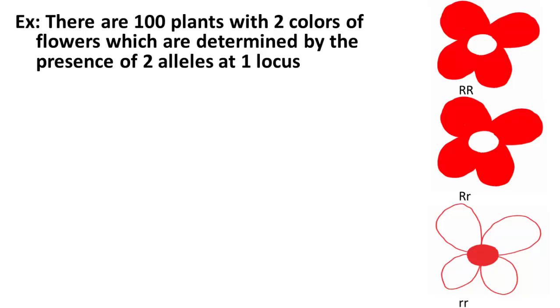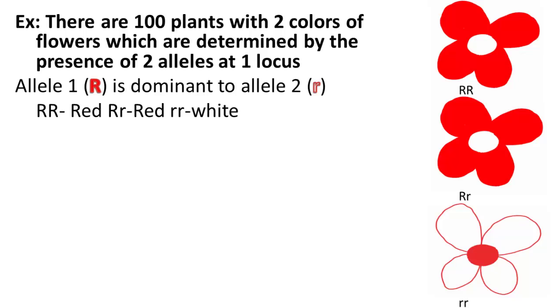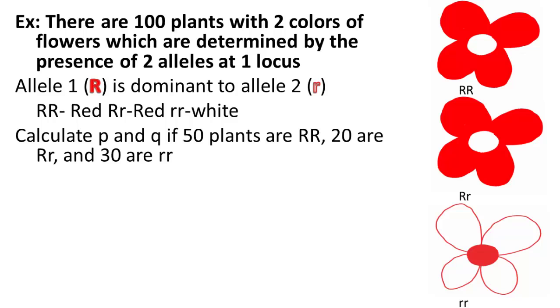So if there are 100 plants with two colors, two phenotypes, they're determined by the presence of two alleles at one locus, and it's a dominant recessive relationship. These are the three on the side here: big R big R is red, so is big R little r, and little r little r is white. How would you calculate p and q if 50 plants are RR, 20 are Rr, and 30 are rr? Very simple.